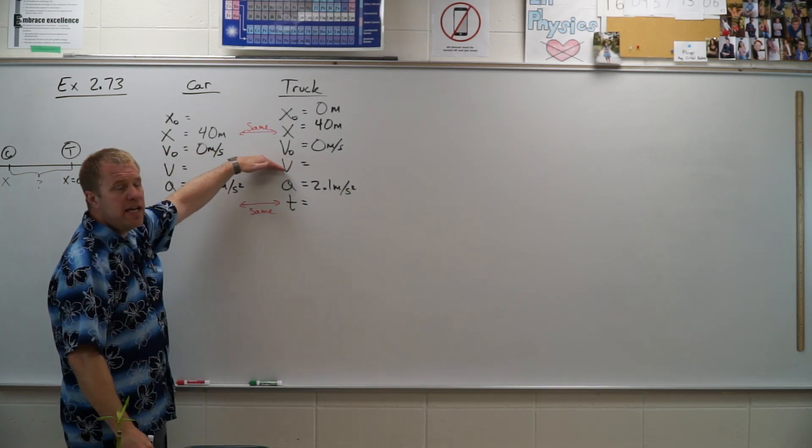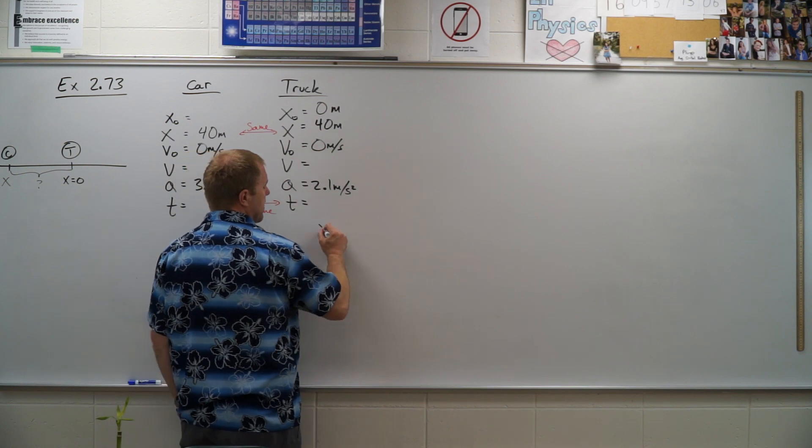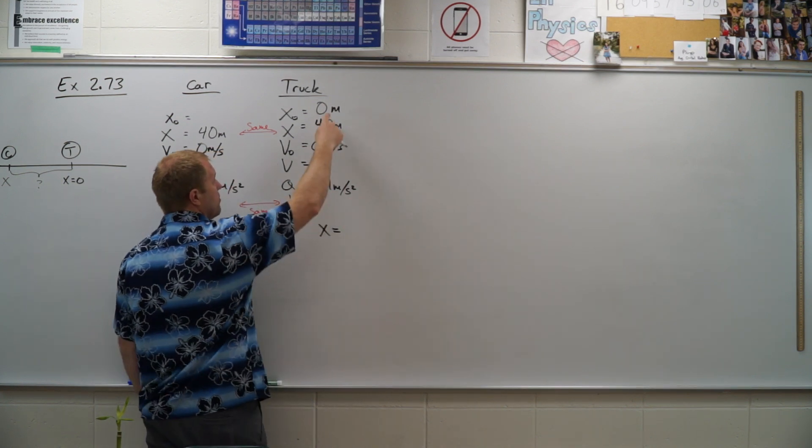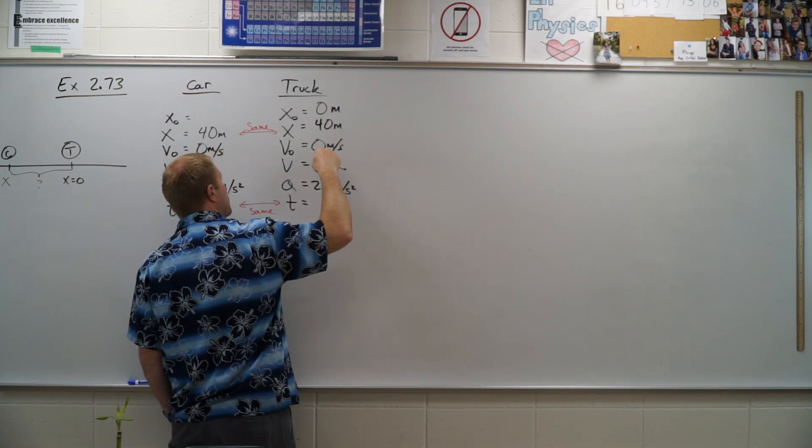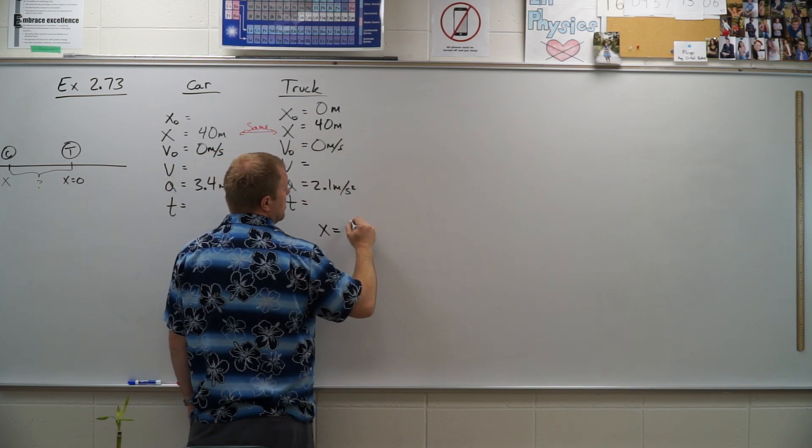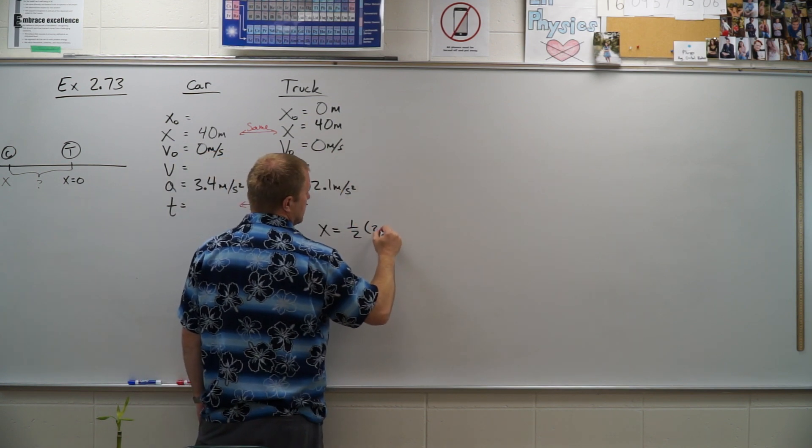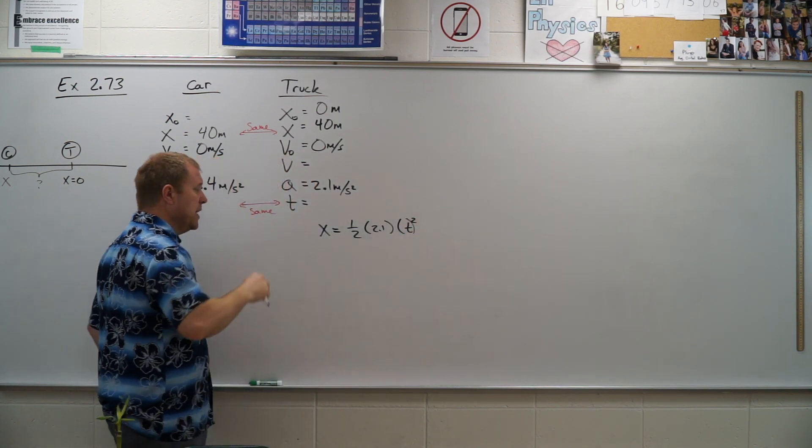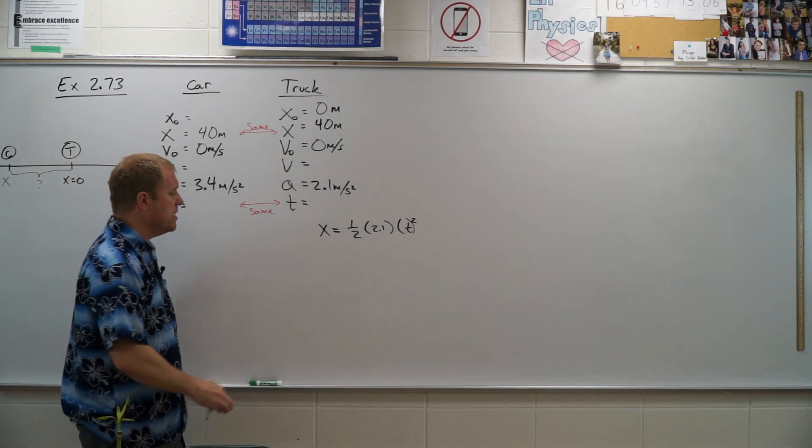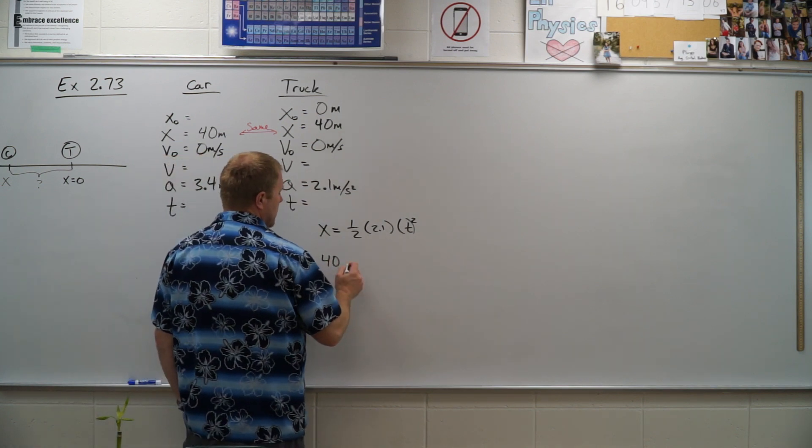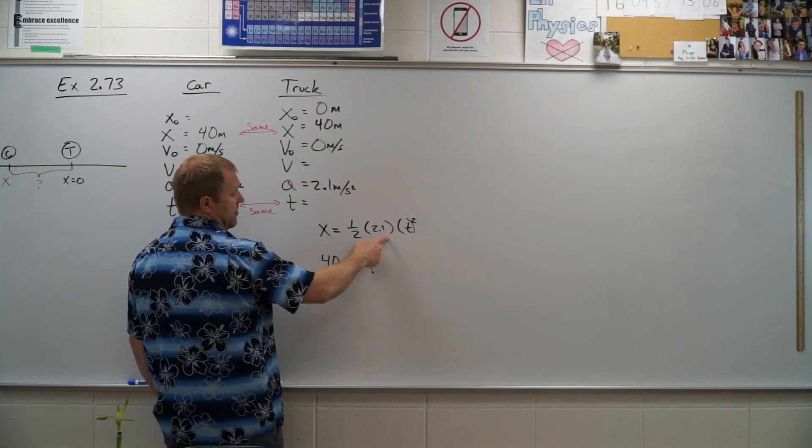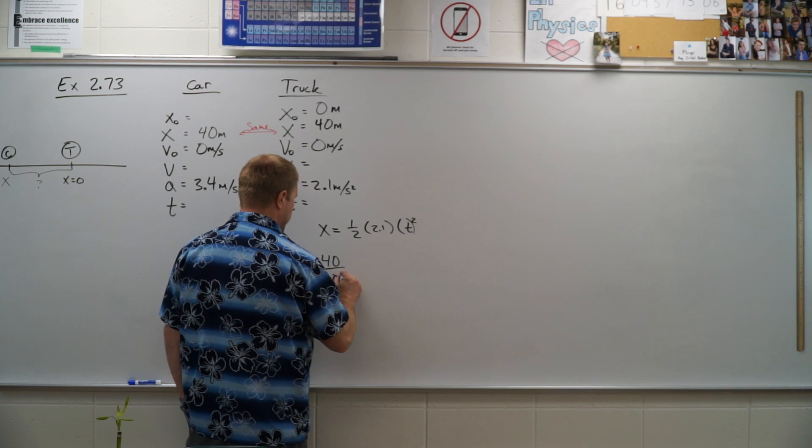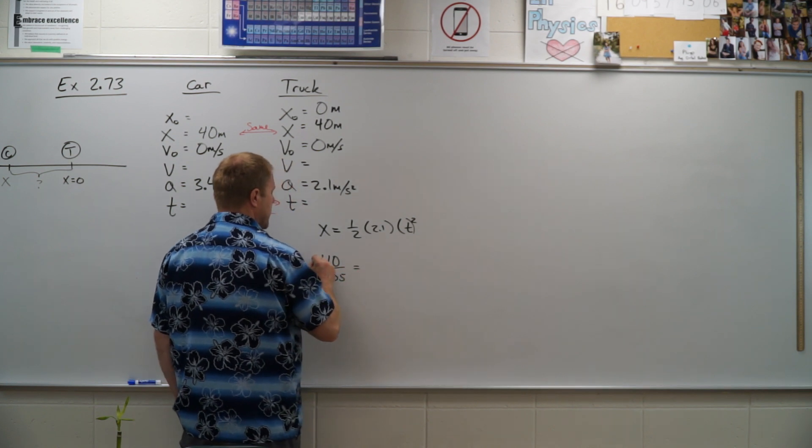All right, so no v final means I'm going to be using equation number three. So I have x is equal to x naught, which was zero, plus v naught t, which is also zero, plus one half times 2.1 t squared. Now I know my x is 40, so I can do 40 divided by half of 2.1, 1.05 is equal to t squared, take the square root.